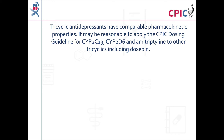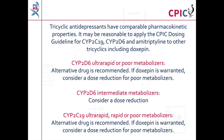Because tricyclic antidepressants have comparable pharmacokinetic properties, it may be reasonable to apply the CPIC dosing guideline for CYP2D6, CYP2C19, and amitriptyline to other tricyclic antidepressants including doxepine. The guideline recommends an alternative drug for patients who are CYP2D6 ultra-rapid or poor metabolizers, or patients who are CYP2C19 ultra-rapid, rapid, or poor metabolizers. If doxepine is warranted, a dose reduction can be considered for patients who are CYP2D6 poor metabolizers, CYP2C19 poor metabolizers, or CYP2D6 intermediate metabolizers.